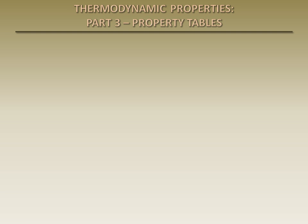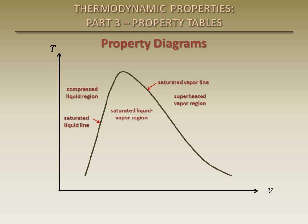In the last presentation, we looked at property diagrams, such as PV and TV diagrams. These diagrams show some of the states of pure substances, such as compressed liquid, saturated liquid-vapor mixture, and superheated vapor. Our goal is to be able to determine the properties of pure substances in any given state so that we can use those properties in the energy equation. The properties of a given substance can be found in property tables.